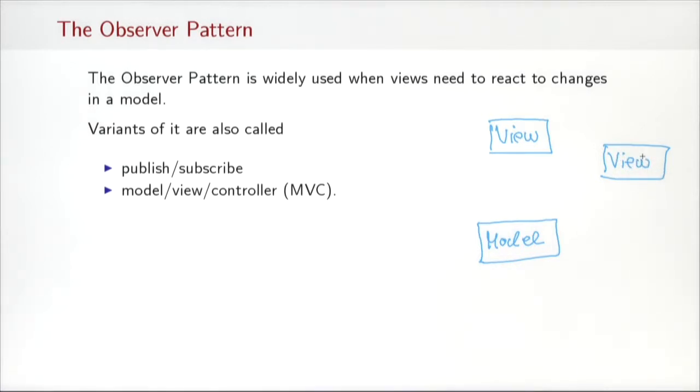Views can announce themselves to the model with an operation which we call subscribe. And the model will then, whenever there's a change, publish the fact that there is new information to the views. The view can then inquire the model about what the new state is and change its presentations. And because essentially views announce themselves as subscribers, there can be more than one view, so there could be another one that also subscribes itself, and gets the same published information.